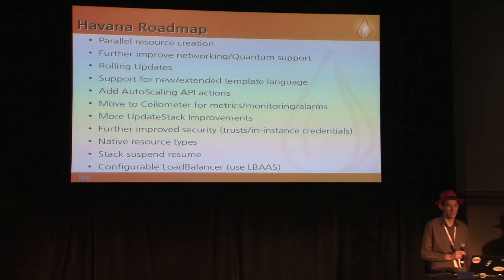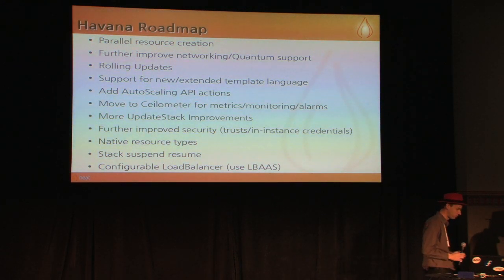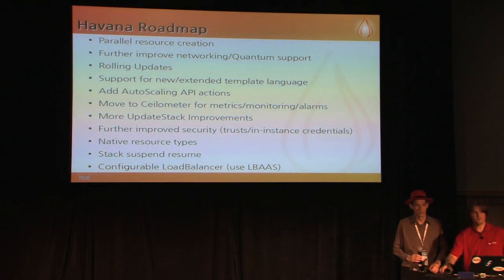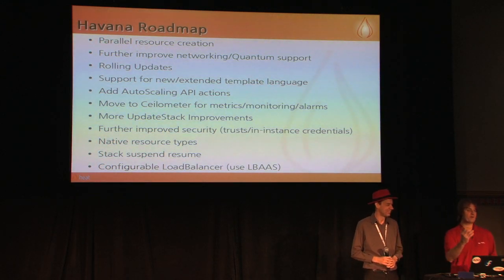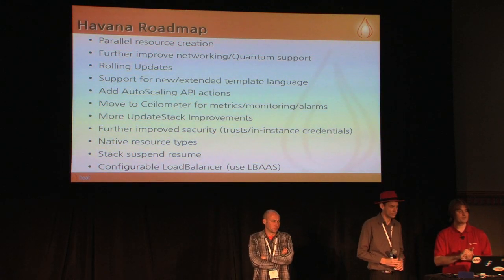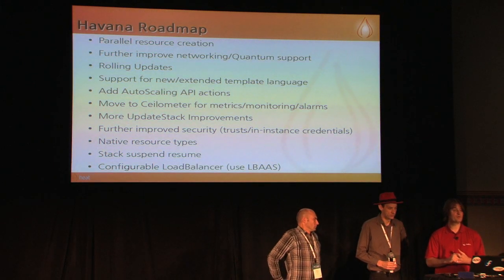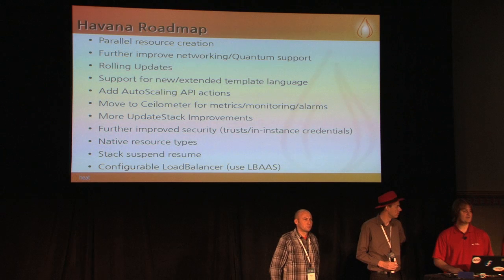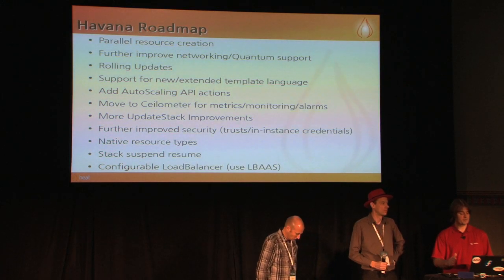Our policy on that is: if something moves into incubation or integration, we'll probably support a plugin, but there's nothing to stop people from developing plugins out of tree as well. This is not necessarily an exhaustive list — I've tried to pick features I'm aware of that are likely to happen during the Havana cycle. If there's stuff that's important to you, your company, or your use case for HEAT, talk to us about it, raise blueprints, come and talk to us on IRC. We're very open to new ideas and we want feedback from people who actually want to use this stuff. We have some really good capabilities at the moment and we're very happy to engage in discussions that shape the direction we go in.